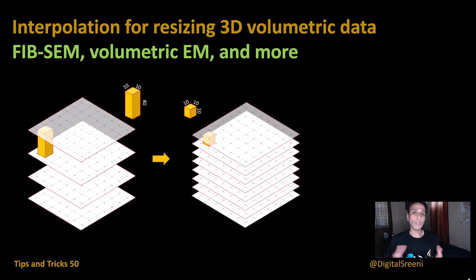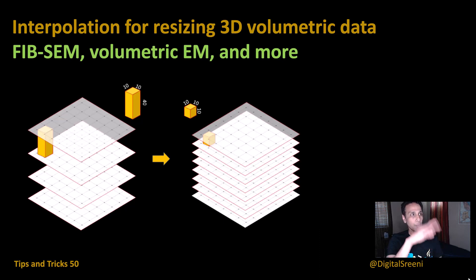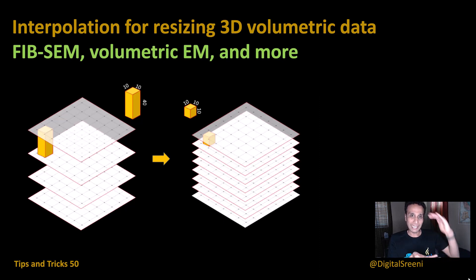Your downstream analysis may require you to change this volume to an isotropic volume, so the voxel size has equal dimensions in all x, y, and z. This video is for you — we're going to take this 10 by 10 by 40 and interpolate it by adding more slices. We take intensities from one slice and intensities from the next, and interpolate based on the distance between them.